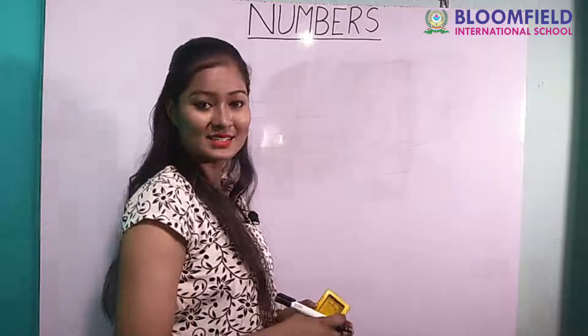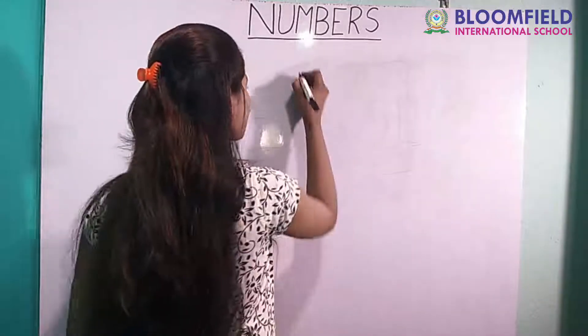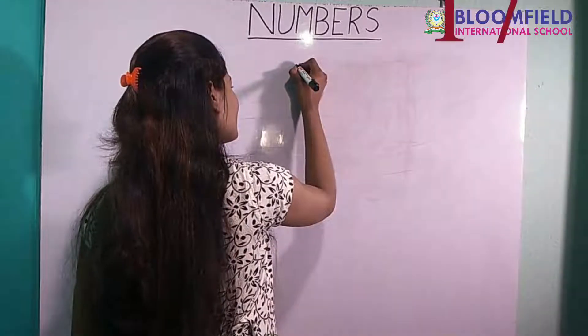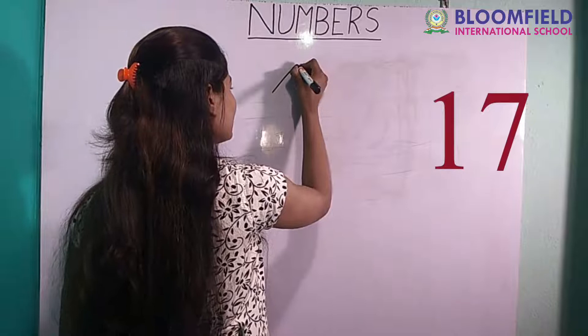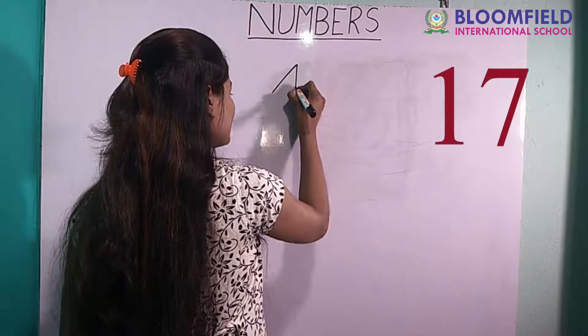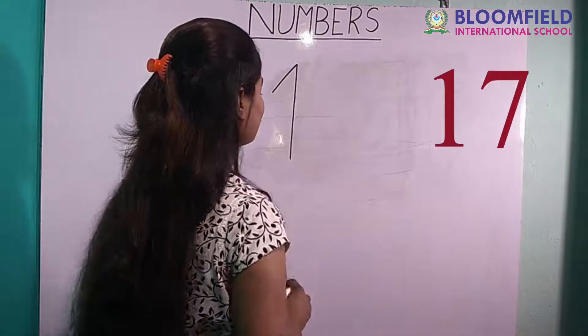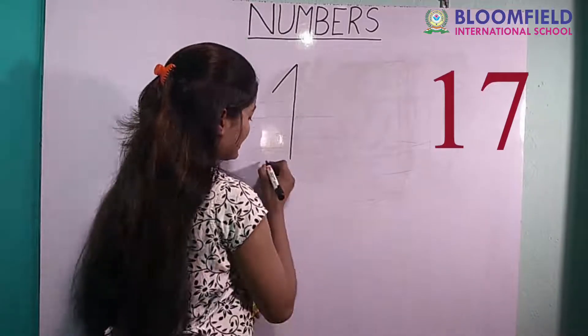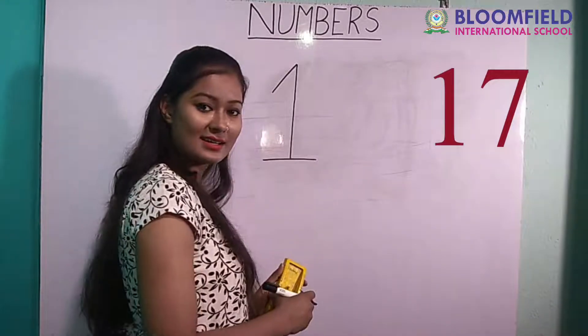Next: slanting line, standing line, then small slipping line. One seven. Seventeen.